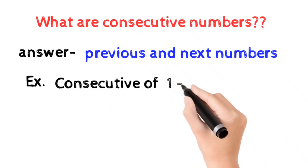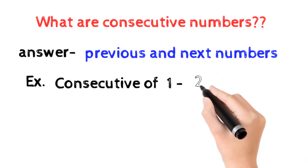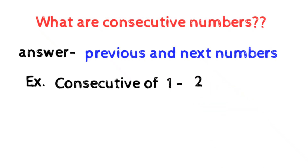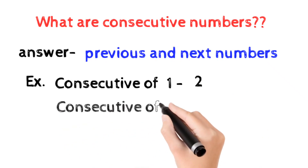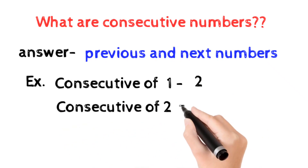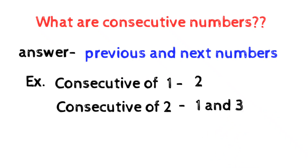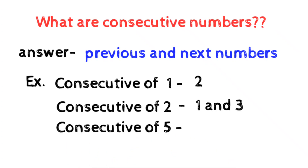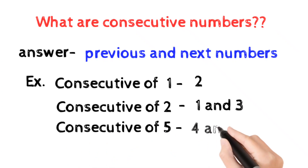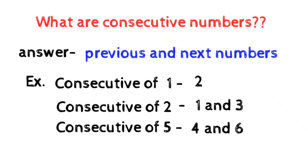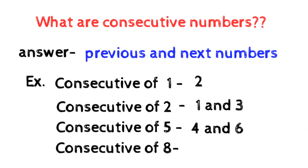The consecutive neighbor of one is two, because two is the next number of one. Similarly, the conjugates of two are one and three — one is the previous number, three is the next. Like that, conjugates of five are four and six. And the conjugate of eight is seven, since seven is the previous number.